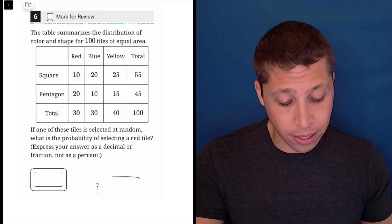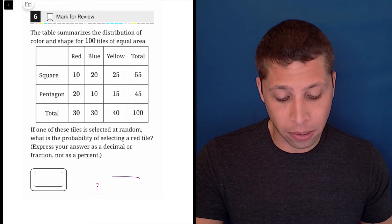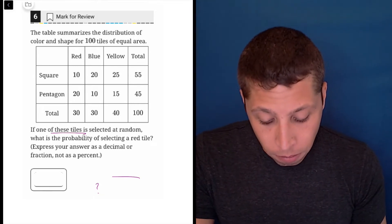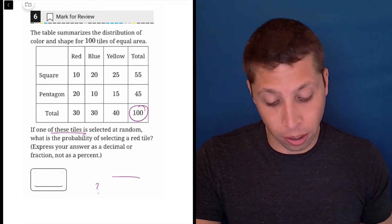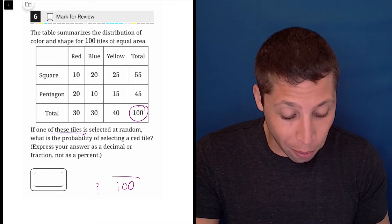If one of these tiles is selected at random, what is the probability of selecting a red tile? Well, they're talking about all the tiles. So we can use 100, which is the thing that they list as the total. However, I will say, fair warning...